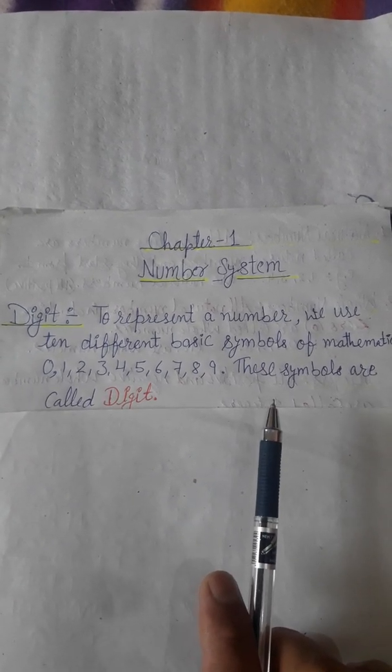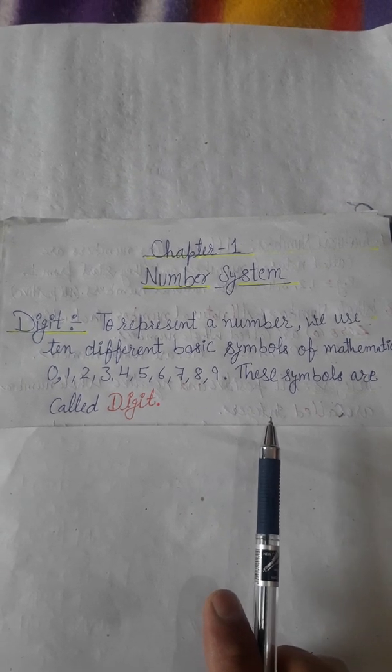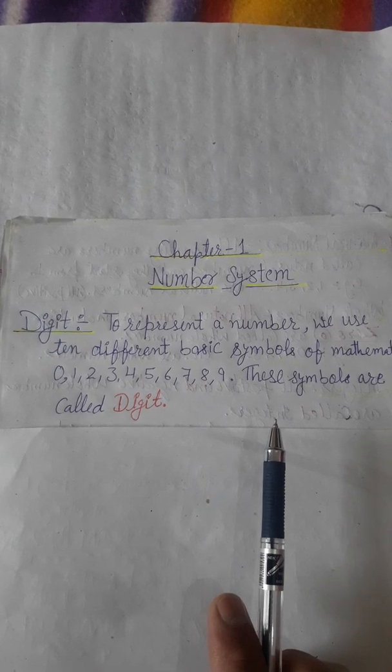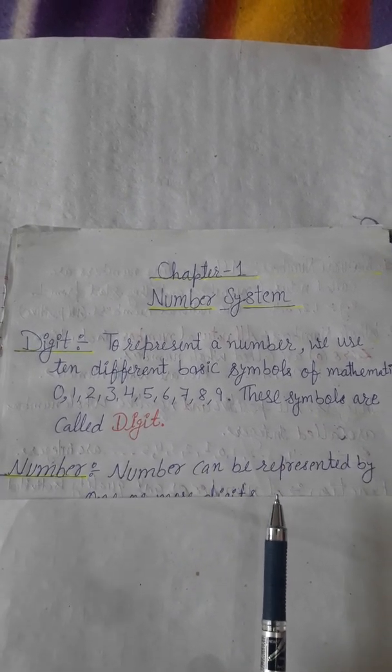Number: A number can be represented by one or more digits. When we write a single digit or a set of digits, that represents a number.